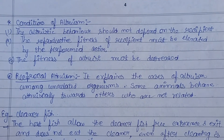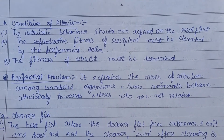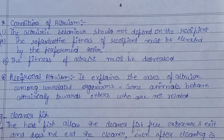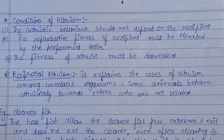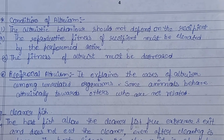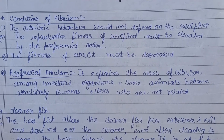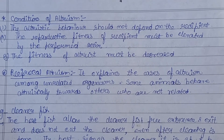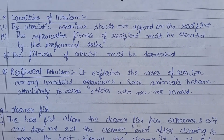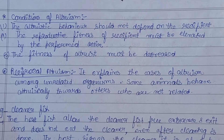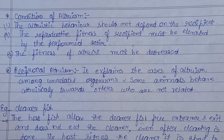The conditions of altruism are: first, the altruistic behavior should not depend on the recipient — the role should be that of the actor. Second, the reproductive fitness of the recipient must be elevated by the performed action. Third, in the case of the actor — the altruist — the fitness must be decreased; that is, their survival chances and reproductive ability must decrease.